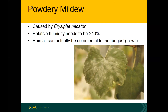Moving on to powdery mildew, which is caused by a fungus as well. It really needs relative humidity to be pretty high, even just to keep its activity going — not just for infection, but for maintaining bioactivity. That's because the thallus, or body of the fungus, is outside of the plant's host tissue. And that's actually why rainfall can be detrimental as well — rain physically hitting the thallus of the fungus can damage it.